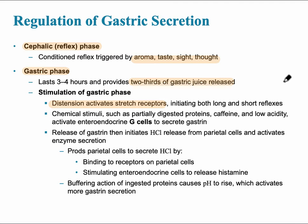The next phase is the gastric phase, which lasts about three to four hours and accounts for about two-thirds of the gastric juices that are released. Several different factors trigger this. The first of which is distension — the stretching of receptors via the long and the short reflex.